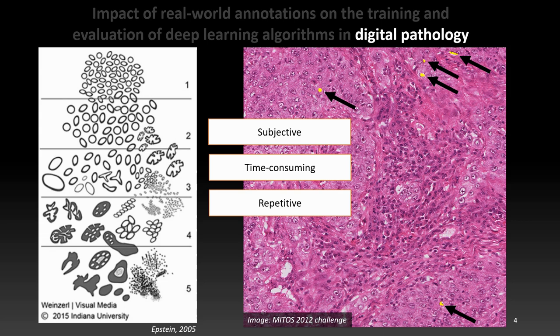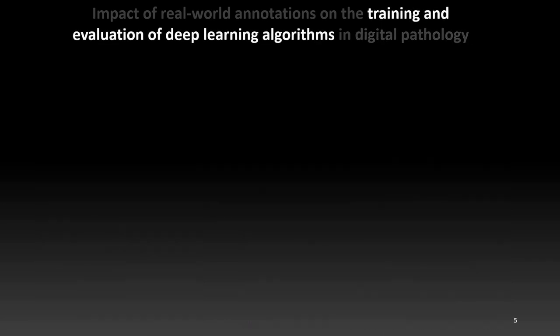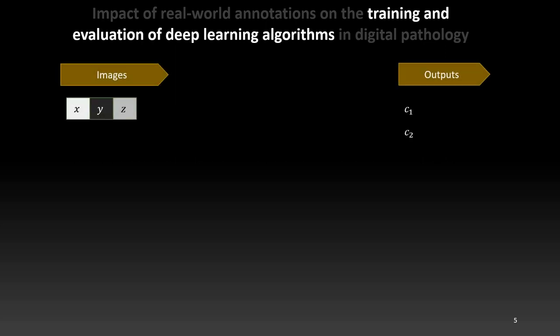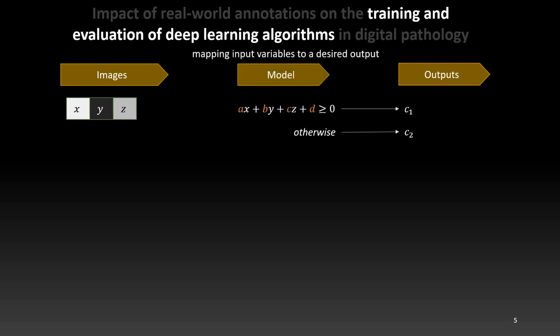In the past decade, the most successful image analysis methods have been deep learning algorithms. So, let me briefly explain what these are about. Let's say that we have as input an image. To make things simple, we will say it has only three pixels. And let's call their values x, y and z. At the output, we have two classes, c1, c2. Between the two, we have a model. A model is a mathematical mapping between our inputs and our outputs.